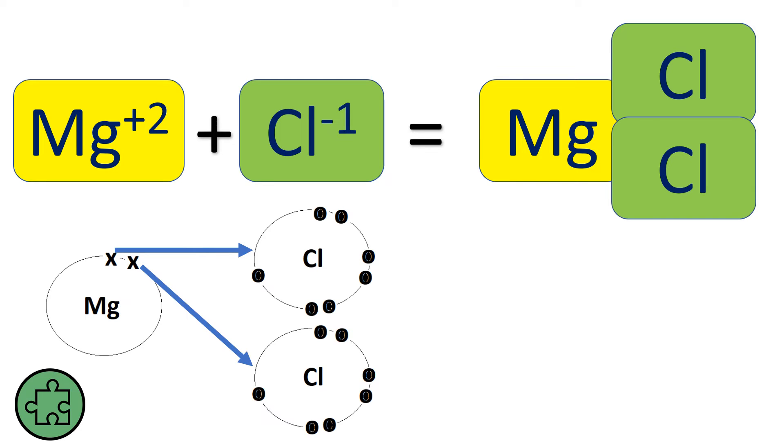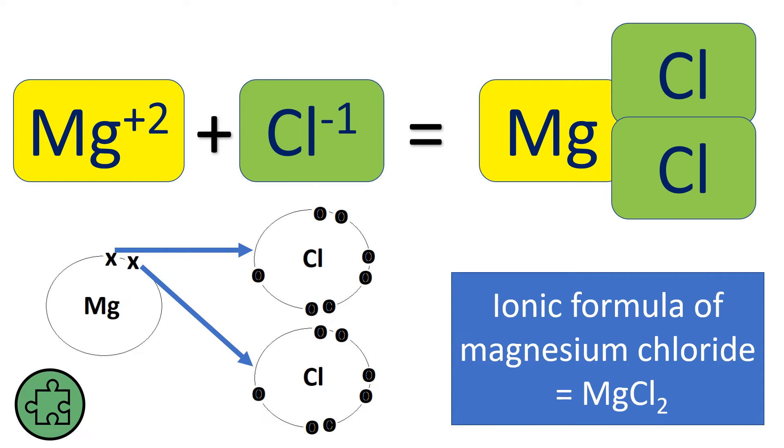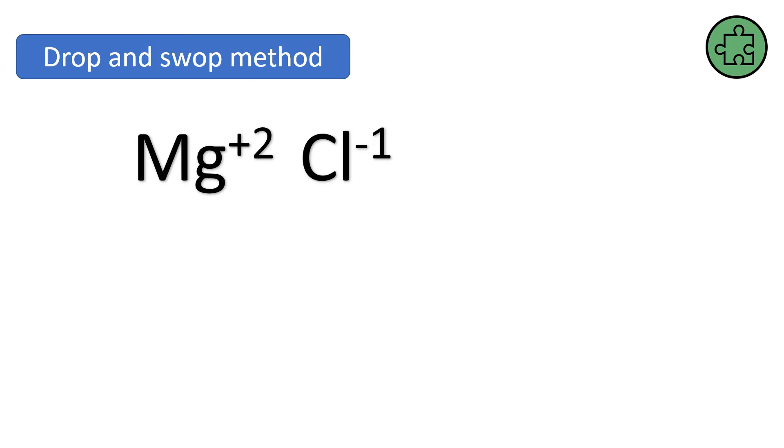So if you think about what we said earlier, I've got a plus two and now I've got minus two because I've got two of these. Plus two, minus two. We're balanced. We're all right. And so the formula for magnesium chloride would be MgCl2.